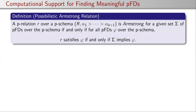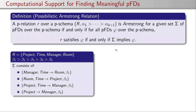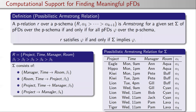A possibilistic Armstrong relation is a perfect sample over a given schema with possibility degrees — perfect in the sense that it satisfies exactly those possibilistic functional dependencies that are implied by the given set. In our running example, beta 1 is the highest certainty degree and beta 4 is the lowest, with the last rule applying only to highly trusted data.